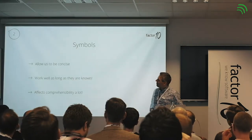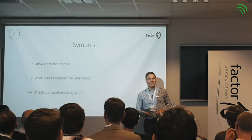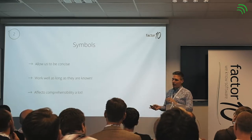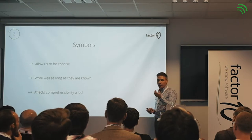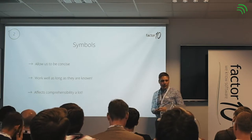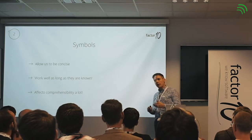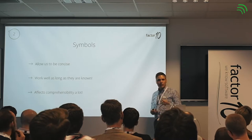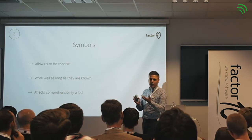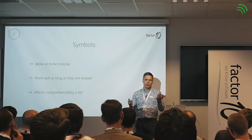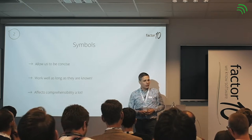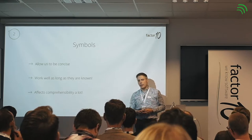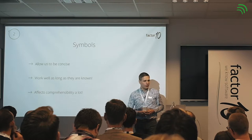This leads us to the topic of symbols. Symbols allow us to be concise because we can use a single character to encode a lot of information — and that works really well as long as the symbols are known. If you show a symbol to someone who isn't aware of the context or meaning, then it's just gibberish. It affects comprehensibility a lot: if you look at a text with many symbols, it may be hard to decode unless you're very familiar with it.